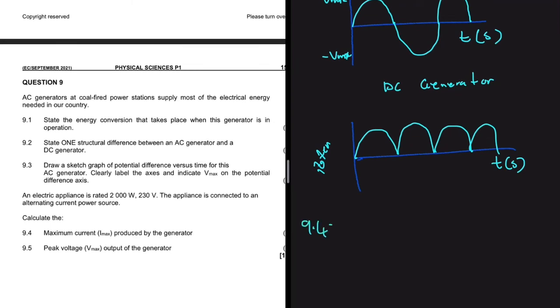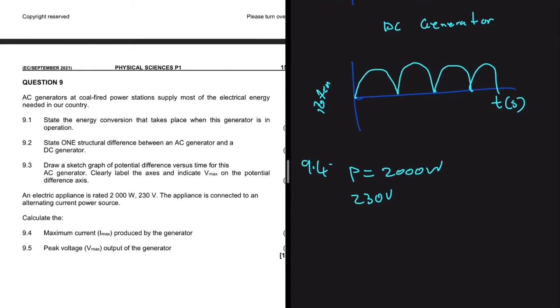Now let's do 9.4. So 9.4 says, they're saying that an electric appliance is rated at 2,000 watts. So we know that we measure power in watts. So as soon as I see 2,000 watts, I'm writing P is equals to 2,000 watts. And then it goes on to say that we also have another value, which is 230 volts. And then it goes on to say that the appliance is connected to an alternating current power source.